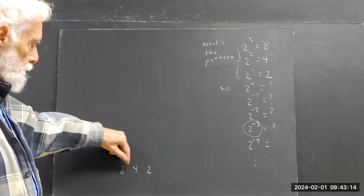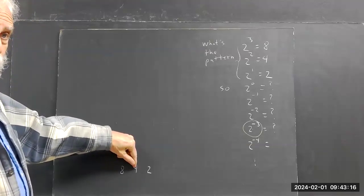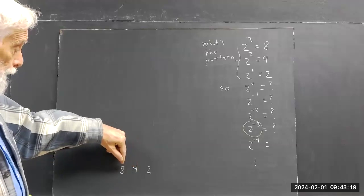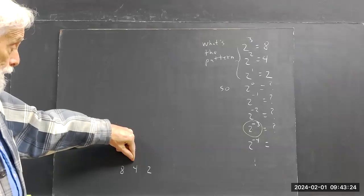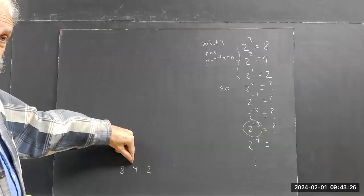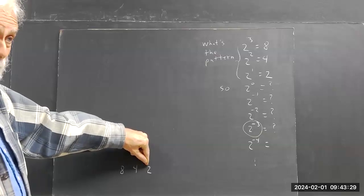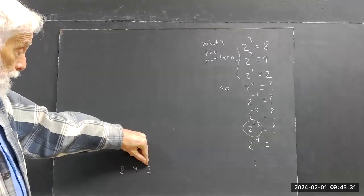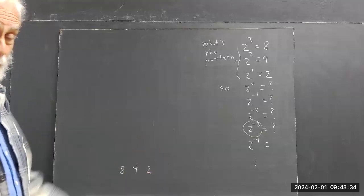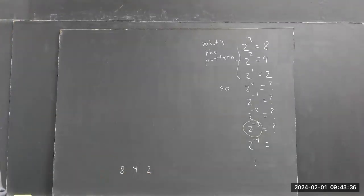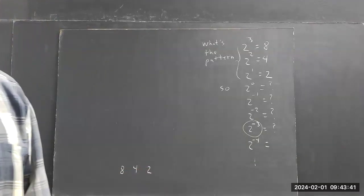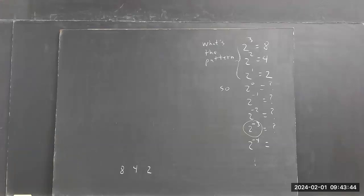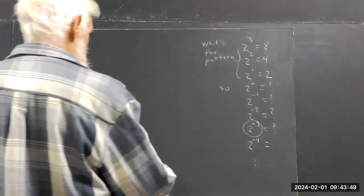What would you do to eight in order to get four? The answer is you divide it by two. If you divide eight by two, you get four. And if you divide four by two, what do you get? Two. If you divide two by two, what do you get? Write it down — just write these numbers: eight, four, two — and then write what you get when you divide by two. Everybody sees that that's one.